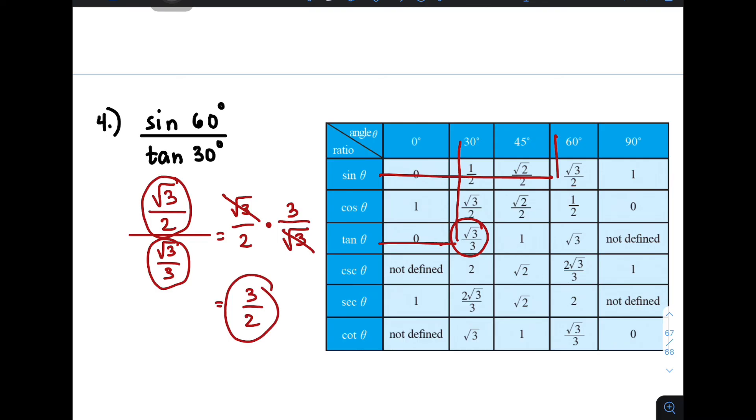This is the answer here. That means, guys, sine 60 degrees over tangent 30 degrees is simply equal to 3 over 2. And this is the final answer, guys.